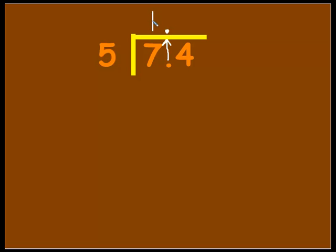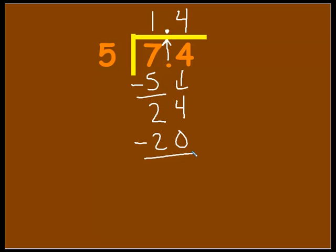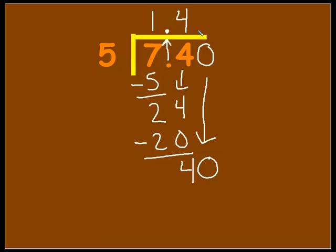5 goes into 7 one time. 1 times 5 is 5. Subtract and we have 2 remaining. Bring down the 4. 5 goes into 24 four times — put it right over the tenths place. 4 times 5 is 20. Subtract and we have 4 left. Usually we would stop and put a remainder here, but we can't do that — you can't mix decimals and fractions together. So we put a zero to continue the division process. We bring it down and keep going so we can finish the problem, because decimals are the remainder.